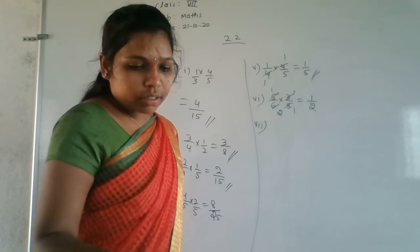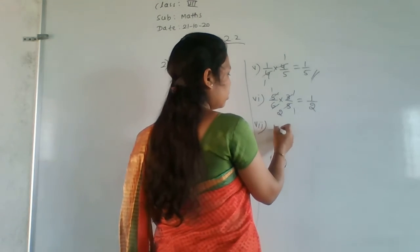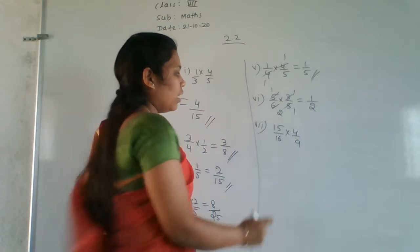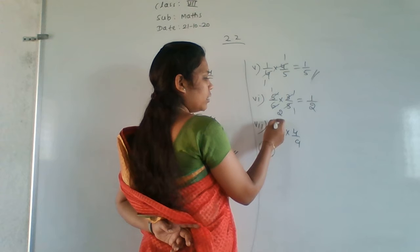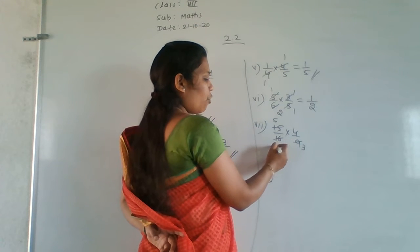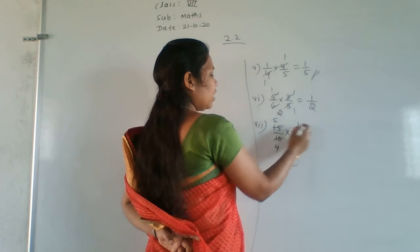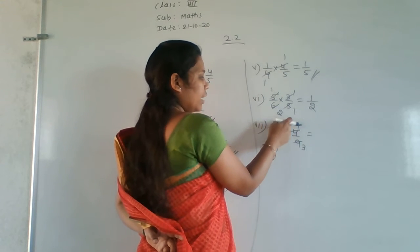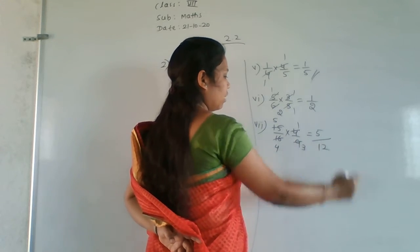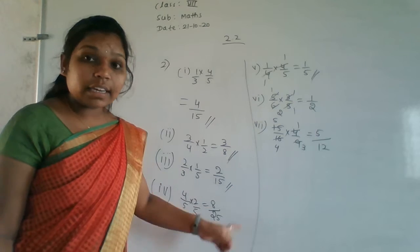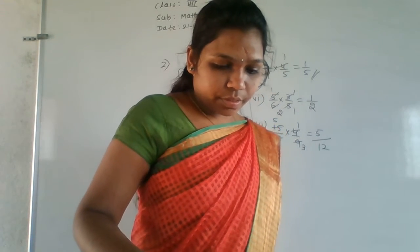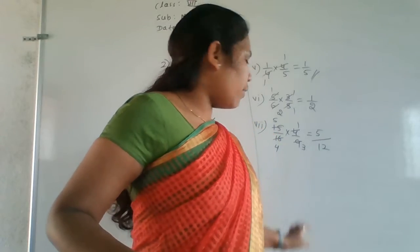Seventh question: 15/16 × 4/9. Cancel 15 and 9: 3×5=15, 3×3=9, so divide both by 3 to get 5 and 3. Cancel 4 and 16: 4×4=16, so divide both by 4 to get 1 and 4. Numerator: 5×1=5. Denominator: 4×3=12. Answer is 5/12.